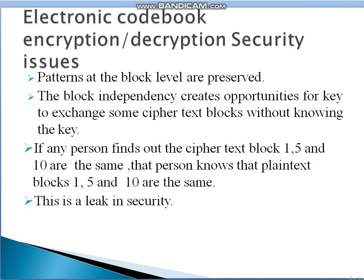The same key is used to encrypt and decrypt each block. However, there are security issues with ECB. Patterns at the block level are preserved — meaning the pattern is fixed. This creates an opportunity for an attacker to exchange some ciphertext blocks without knowing the key. If any person finds out that ciphertext blocks 1, 5, and 10 are the same, they know the plain text blocks are also the same, which leaks security.